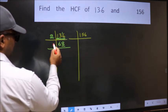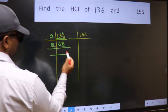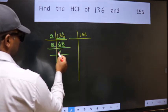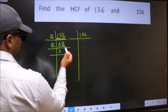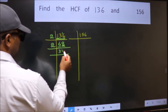Last digit 8 is even, so take 2. First number 6, when do we get 6 in the 2 table? 2 times 3 is 6. The other number 8, when do we get 8 in the 2 table? 2 times 4 is 8.